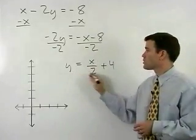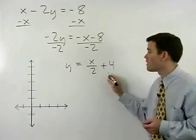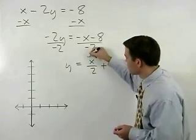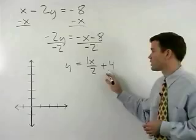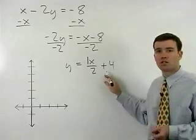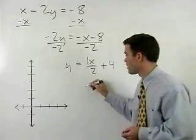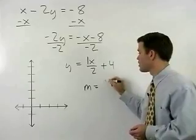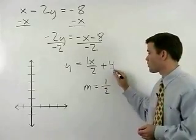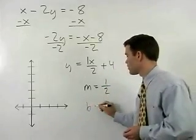y equals x over 2 plus 4 can be thought of as y equals 1x over 2 plus 4, so that you can see that our slope or m is 1 half and our y intercept or b is 4.